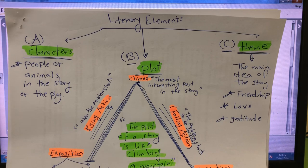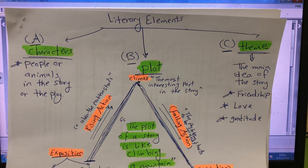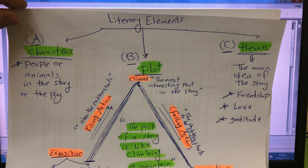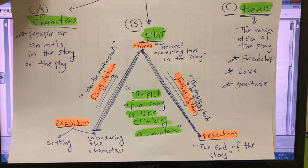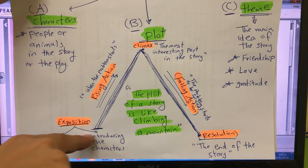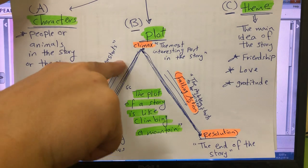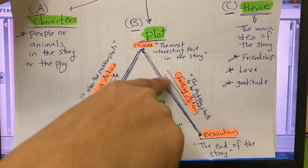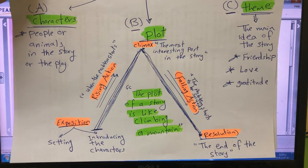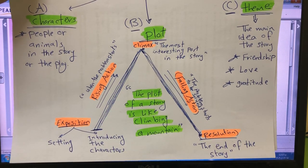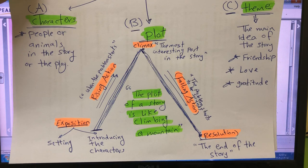The plot, which is the most interesting part of the literary elements today, is divided into a series of events: starting with the exposition, going to the rising action, then the climax, then the falling action, and finally the resolution. The plot is like climbing a mountain — you start climbing your mountain with the exposition, or the setting of the story.